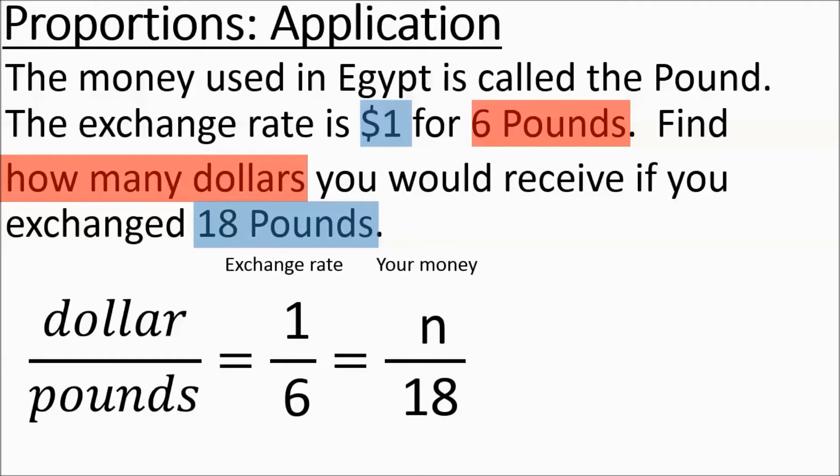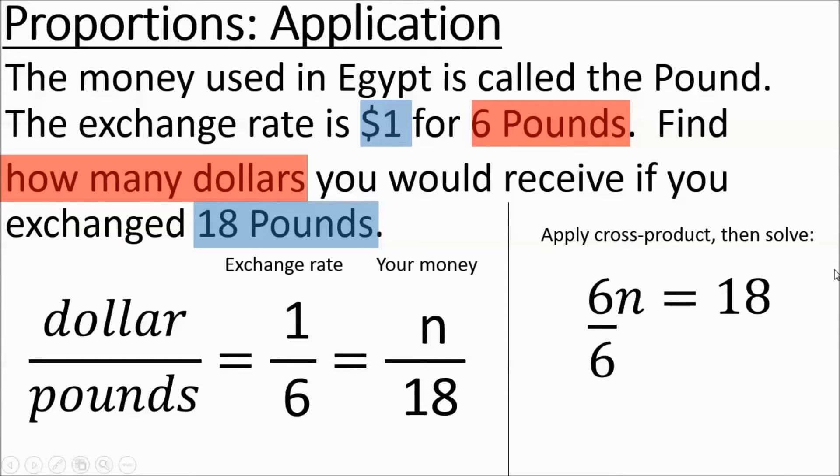So we've set up our proportion. We have enough information to set up some cross products. So we're going to get 6 times n equals 18. We got the 6 times n being diagonal and the 1 times 18 being 18. From there we're going to divide out the 6, get n equaling 3. So $3 will get you, you'll get $3 if you exchange 18 pounds.